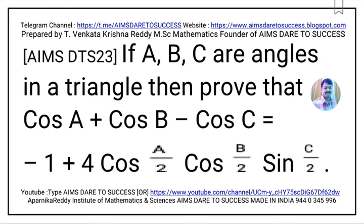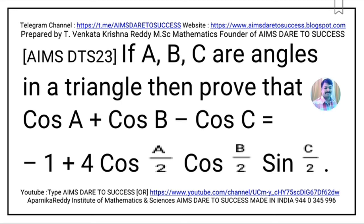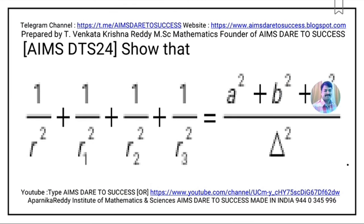Question 23: If A, B, C are three angles in a triangle, then prove that cos A + cos B − cos C = −1 + 4·cos(A/2)·cos(B/2)·sin(C/2). This question is from Trigonometry.